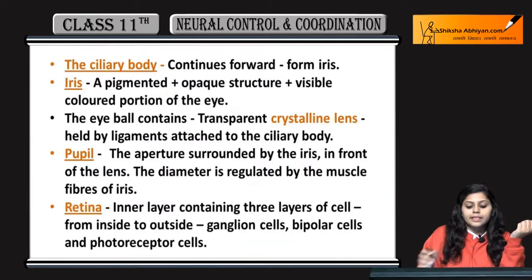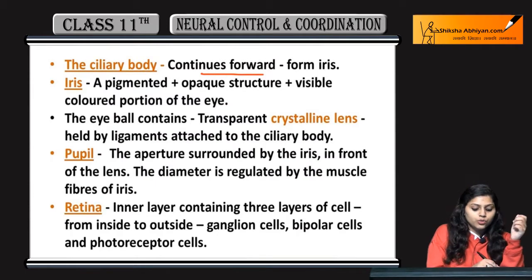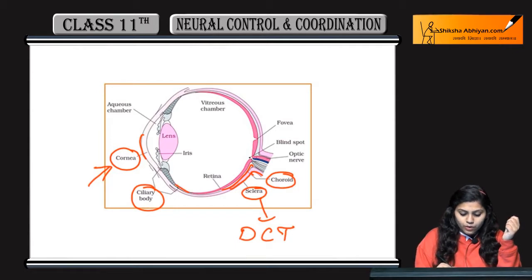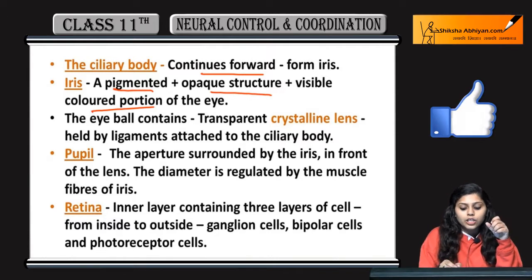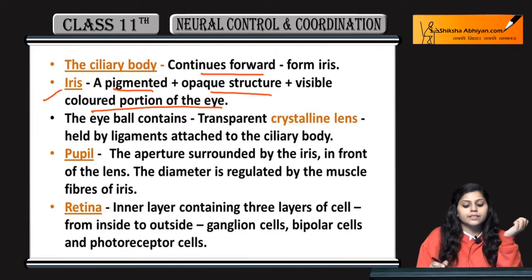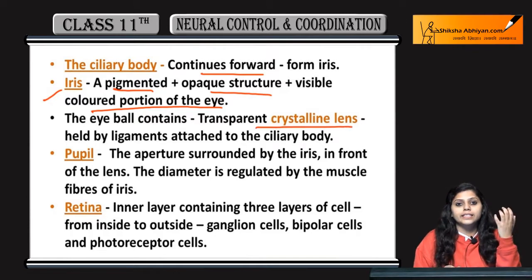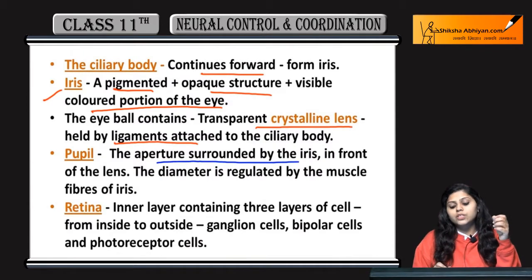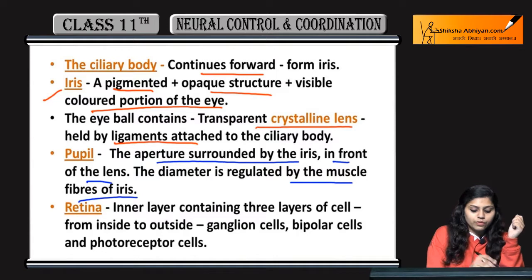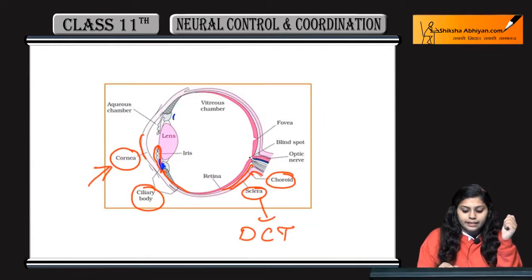The ciliary body continues forward to form the iris. Iris is a pigmented opaque structure — it is the visible colored portion of the eye. The eyeball contains a crystalline lens, which is attached via ligaments to the ciliary body. Next is the pupil, which is the aperture surrounded by the iris, in front of the lens.